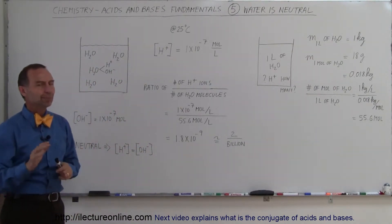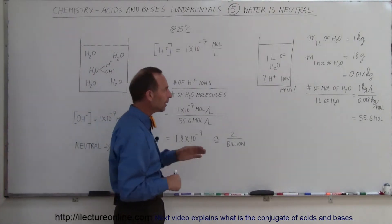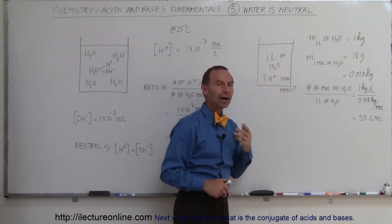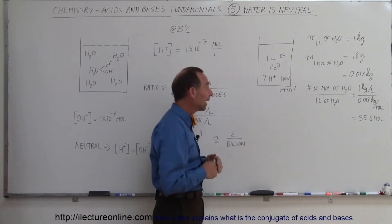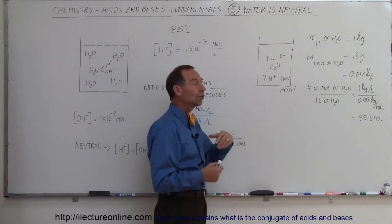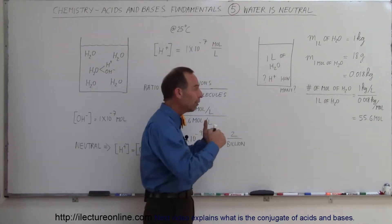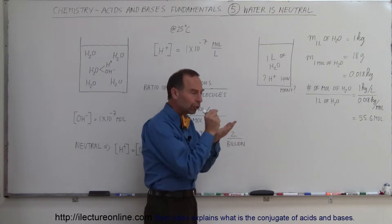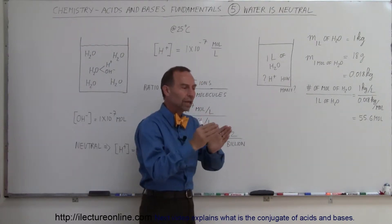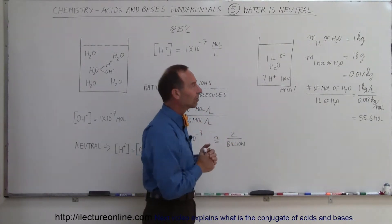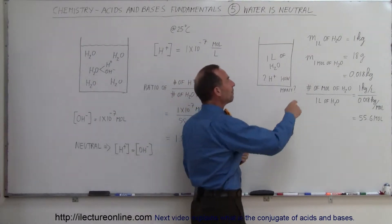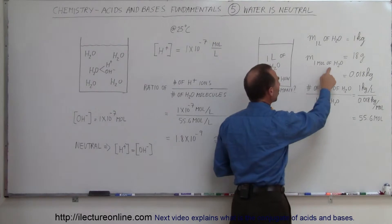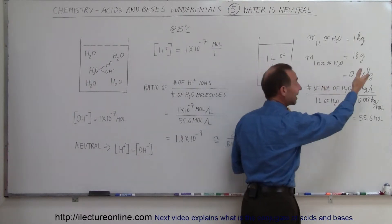What does that really mean? Let's think about it this way. Say we have a beaker with one liter of water in it, and the question is how many hydrogen ions are in that beaker, given that at 25 degrees centigrade a certain percentage of the water will dissociate into hydrogen ions and hydroxide ions. The mass of one liter of water is one kilogram, and the mass of one mole of water is 18 grams.